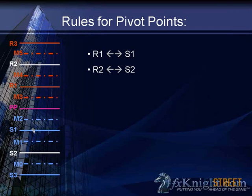If your move down doesn't stop at S1 but you get to S2 and get a bounce, that move is going up to R2 more often than not unless something else interrupts it. If you get a bounce down at R2, more often than not that move goes down to S2. Same thing in reverse.